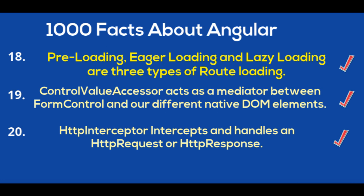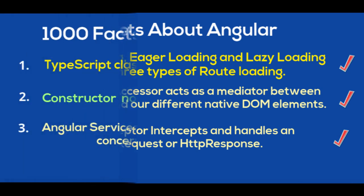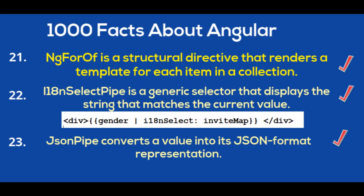HTTP Interceptor intercepts and handles HTTP requests or HTTP responses. For example, if you want to pass a token, you can configure and set the token inside the intercept method and it will be passed through each and every request.